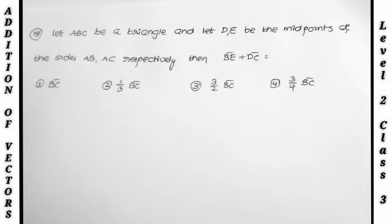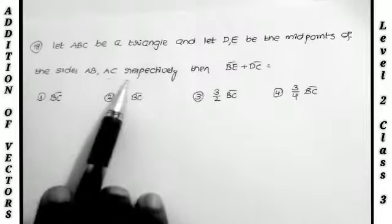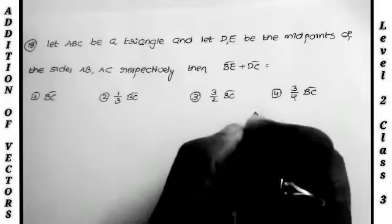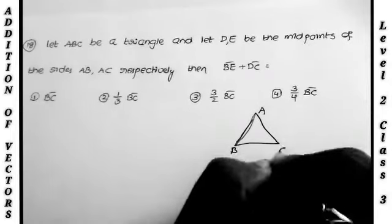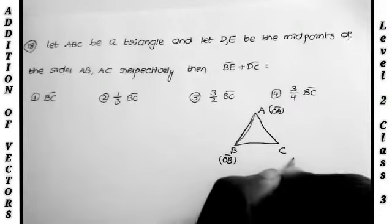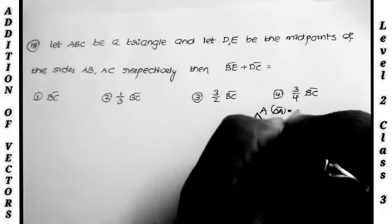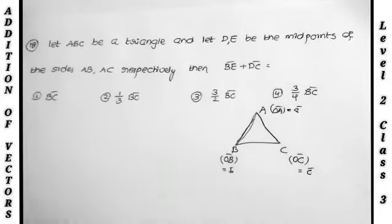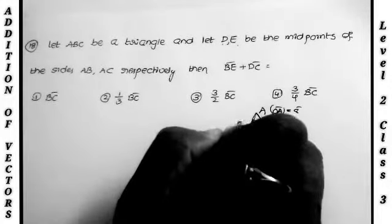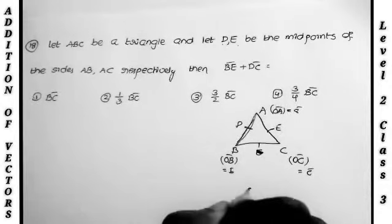The first problem: Let ABC be a triangle, and D and E be the midpoints of sides AB and AC respectively. Then what is the value of BE bar plus DC bar? The given data: ABC is the triangle with vertices A, B, C. The position vector of A is OA bar, of B is OB bar, and of C is OC bar. We take OA bar = A bar, OB bar = B bar, OC bar = C bar. D and E are midpoints of AB and AC respectively.